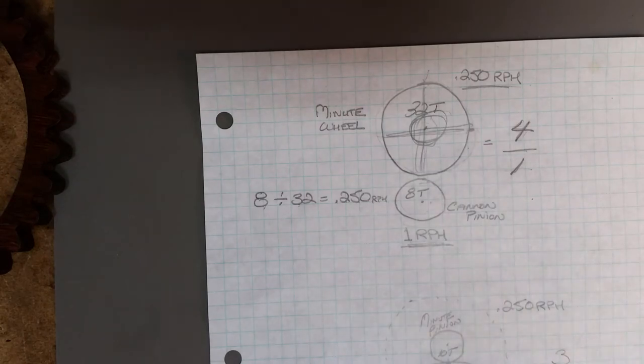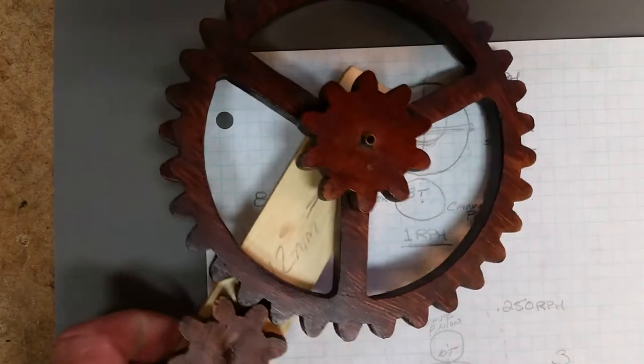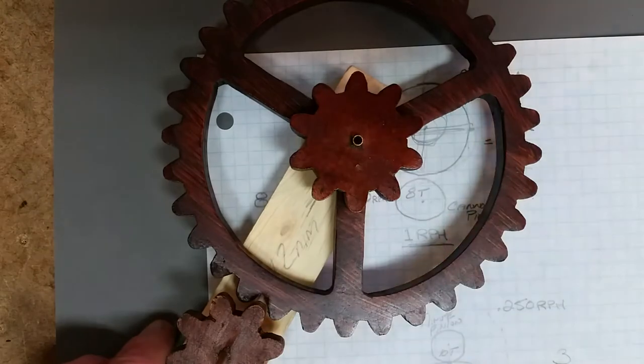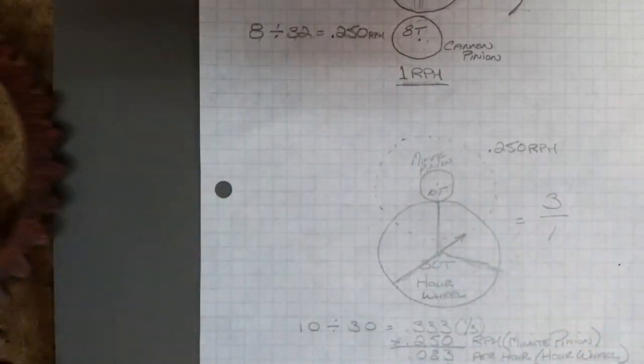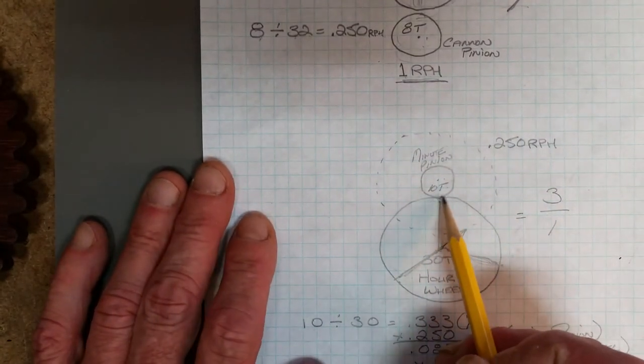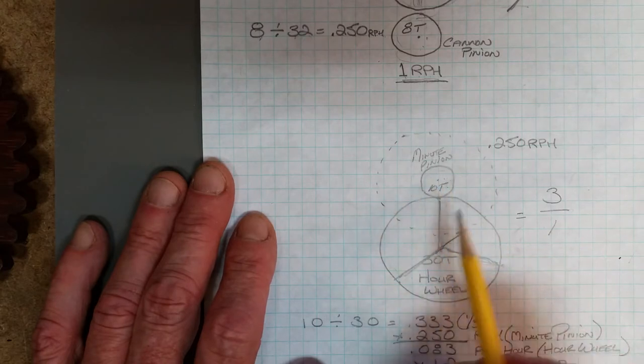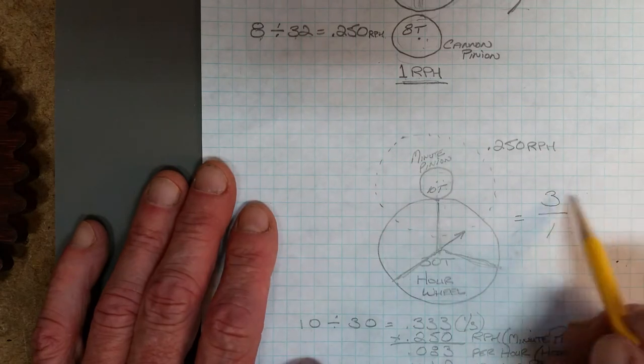The second part now, let's talk about the pinion and the hour wheel and its relationship to one another. The minute pinion is a 10 tooth gear and the hour wheel is a 30 tooth gear. If this goes around one time, it's going to take up 10 teeth which is exactly one third of the wheel, so we can say now it's a 3 to 1 ratio.